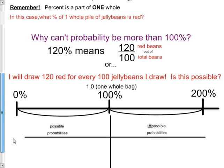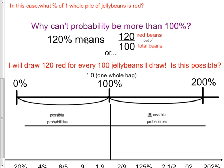So let's explore a little bit. Why can't probability be more than 100 percent? 120 percent, for example, if I said 120 percent chance of drawing a red means that I would draw 120 red beans out of 100 total beans. Or I will draw 120 red for every 100 jelly beans I draw. But is that even possible? I can't draw more red than what exists. So that isn't going to be possible.